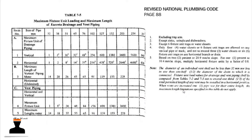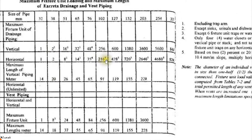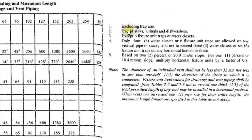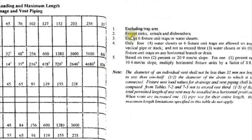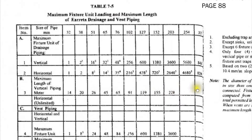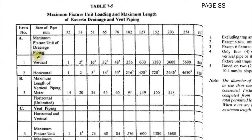When you compute the total drainage fixture unit, trace where it falls in the table — just like what we did in designing the water supply pipe. Now if your fixture unit falls under a value with a superscript, check the notes. For superscript 2: you can choose that value, however you should not consider sink, urinals, and dishwashers. If those three fixtures are connected to your vertical pipe, move to the next higher value, which is 16.